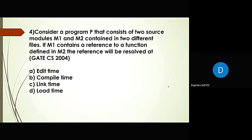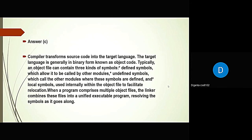Thank you, Debraj. Good evening, sir. My question is: consider a program P that consists of two source modules, M1 and M2, contained in two different files. If M1 contains a reference for a function defined in M2, the reference will be resolved at? The options are edit time, compile time, link time, and load time. Edit time will be eliminated first. The compiler transforms source code to the target language, generally in binary form, known as object code.